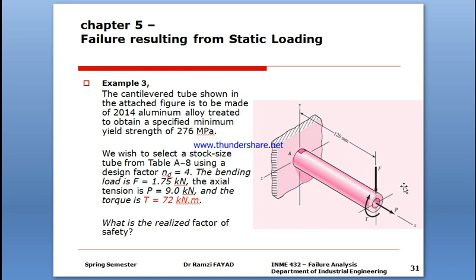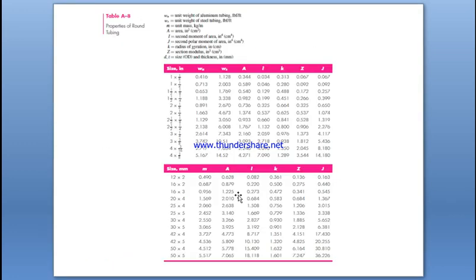The tube experiences bending, tension, and torque. We're going to realize a factor of safety equal to four using distortion energy. What you have to do, which is different, is that several values are considered in this example.